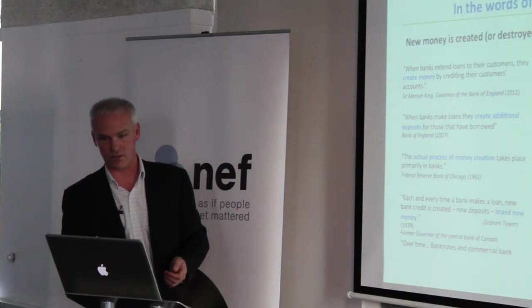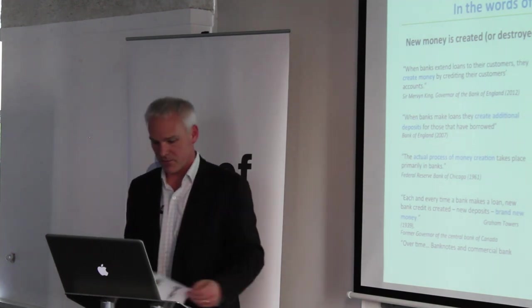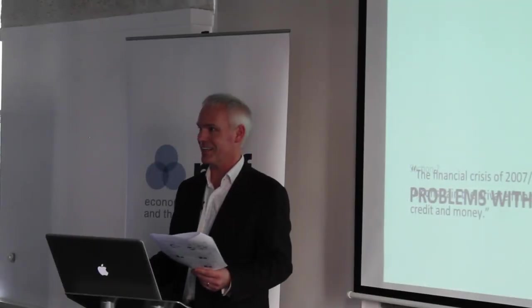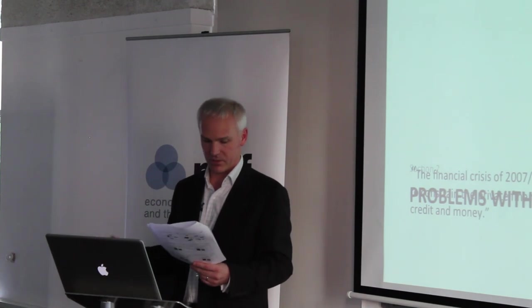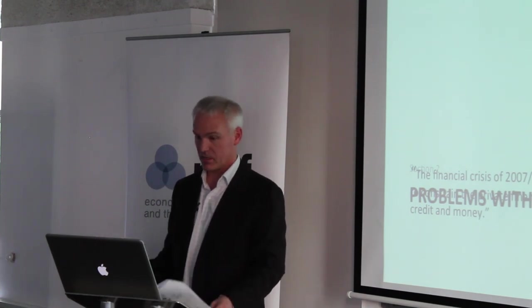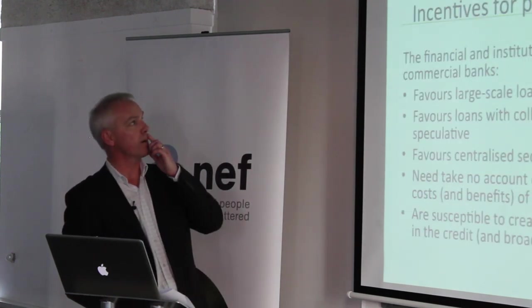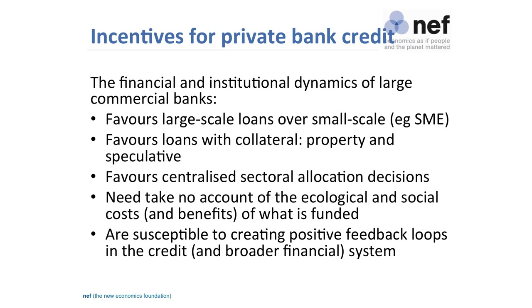But I suppose they haven't worked in banks — maybe we should not be too hard on them. If only they weren't in charge of anything, it would be all right. So, problems with this system. It's from Adair Turner, who said: 'The financial crisis occurred because we failed to constrain the private financial system's creation of private credit and money.' So here we have a former head of financial regulation, leading up to the crash, saying the crash happened because we didn't constrain credit creation.